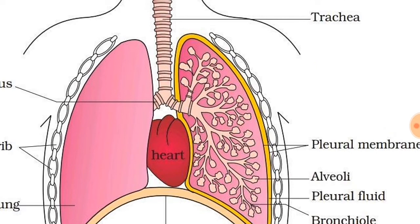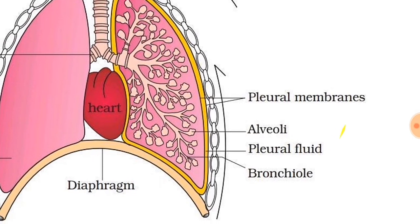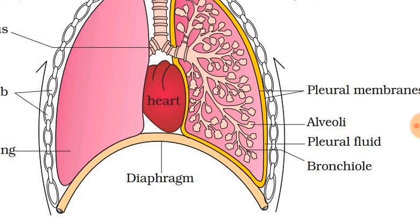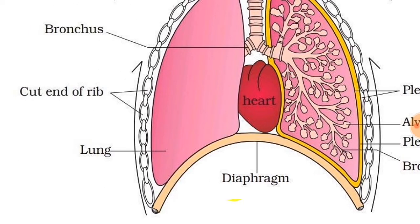The lungs are covered by double-layered pleural membranes — the yellow structure you can see — with pleural fluid in between. The pleural fluid prevents friction of the lungs, acting as a lubricant. The small sac-like structures are known as alveoli, which is the terminal part of the respiratory system. The bronchioles end into the alveoli. The diaphragm is a thick muscular organ that separates the pulmonary cavity from the abdominal cavity.